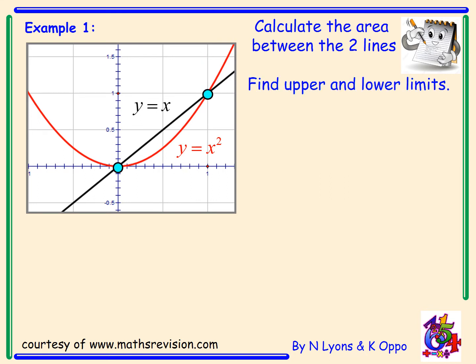So it says find upper minus lower limits. Now I can see it on the graph here, but if you don't have a graph or a proper sketch, we're going to equate them: x squared minus x. So I've got x squared minus x equals 0. Factorize: x times (x minus 1) equals 0. So solving that, x is 0 and x is 1, and we can see that we can read it off the graph anyway.